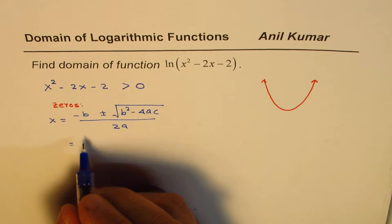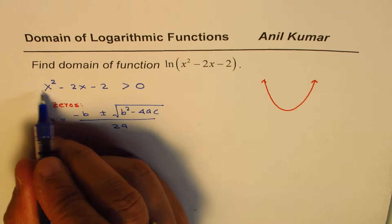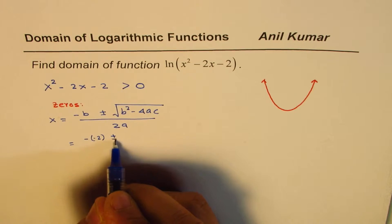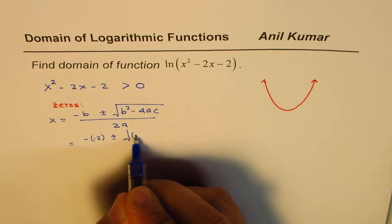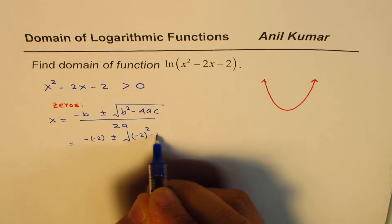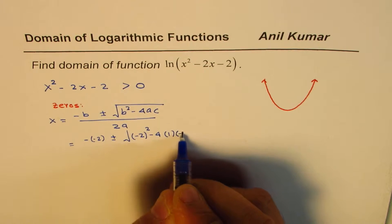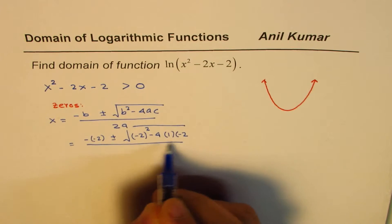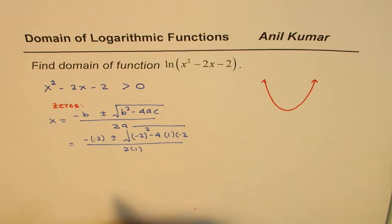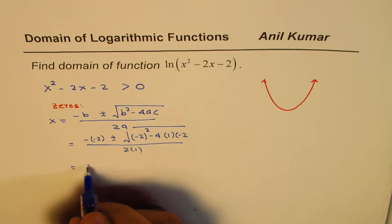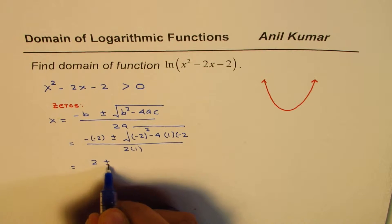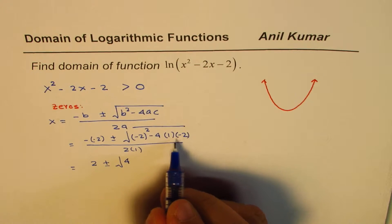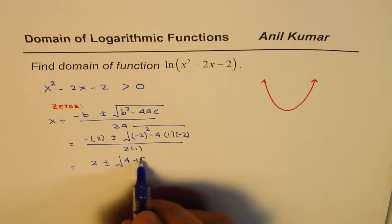So substituting: b is -2, a is 1, c is -2. That gives us: -(-2) ± √((-2)² - 4·1·(-2)), all divided by 2·1. Simplifying: 2 ± √(4 + 8), which gives 2 ± √12.